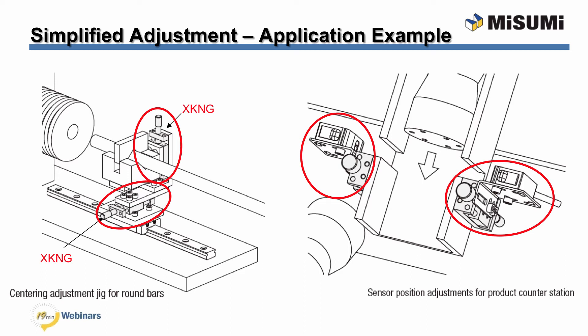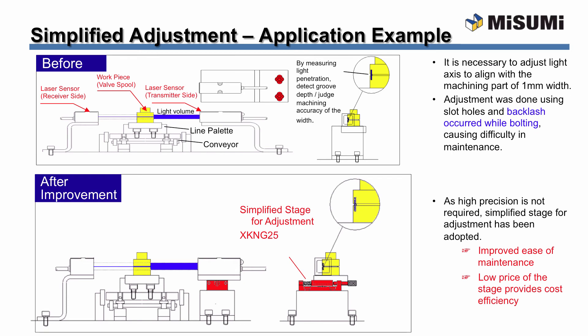The example on the right also utilizes a simplified adjustment unit used to position a counter sensor. In another example, the user needed to adjust the light axis to align the part to be machined to a 1 mm width. The adjustment was done using slot holes, which resulted in backlash during bolting and caused difficulty in maintaining the prescribed position. After improvement, the adjustment to the x and y-axis can be made in a precise and simple manner. Bolting is no longer required as the position is adjusted using the feed screw on the stage — a low cost improvement to increase overall efficiency.